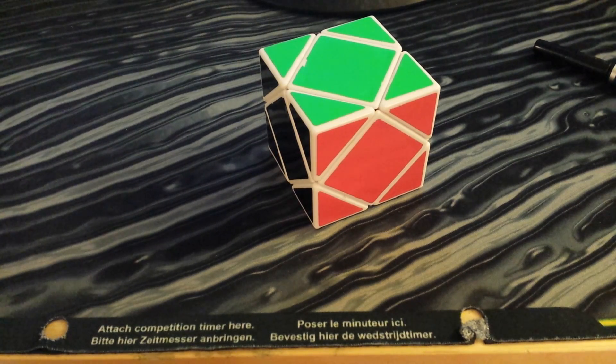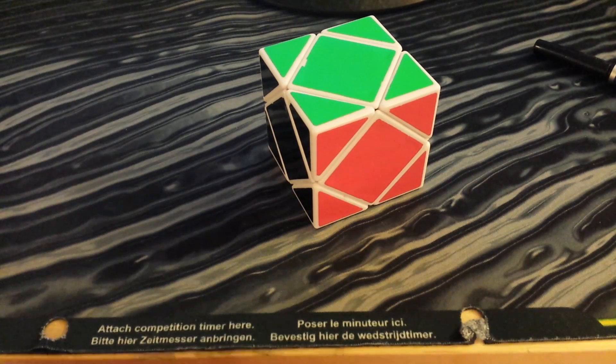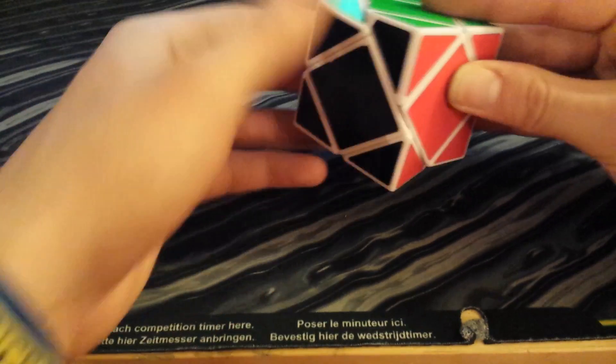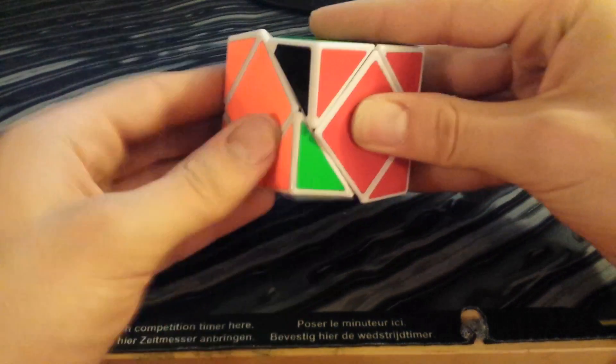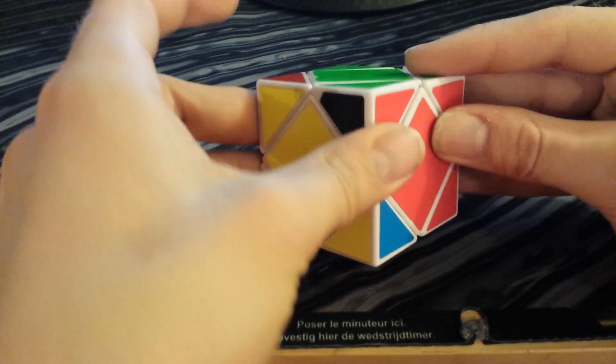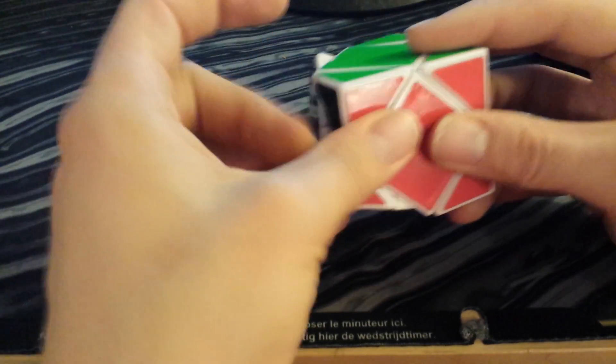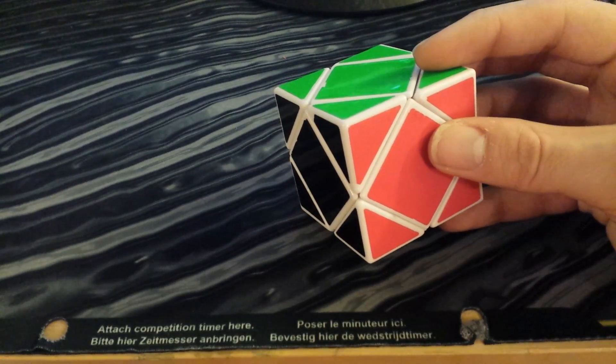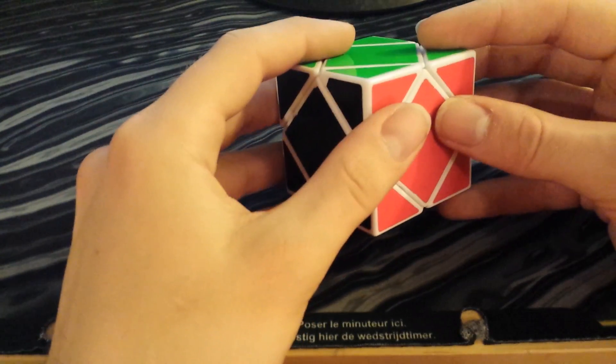The last finger-tricking tip I wanted to talk about was my L moves. This is L in terms of FCN. If this is the fixed corner here, this would be a turn like this. One way I do it is by pushing with my middle and ring finger on my left hand. This doesn't seem very useful, but I'll show you how I use it in my H perm.